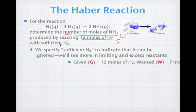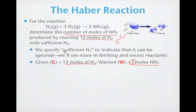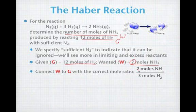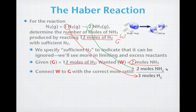Let's take a look at what we have. We've identified our given: 12 moles of hydrogen. The wanted — we don't know how many moles of ammonia, so that's going to be our question mark. To connect the wanted to the given, we look at the mole ratio. The mole ratio important here is the one in which the moles of hydrogen cancel — we use the coefficient 3 from the balanced chemical equation in the denominator. For the wanted, we look at the 2 moles of ammonia and put that on top. We always have our wanted over our given using the coefficients from the balanced chemical equation.